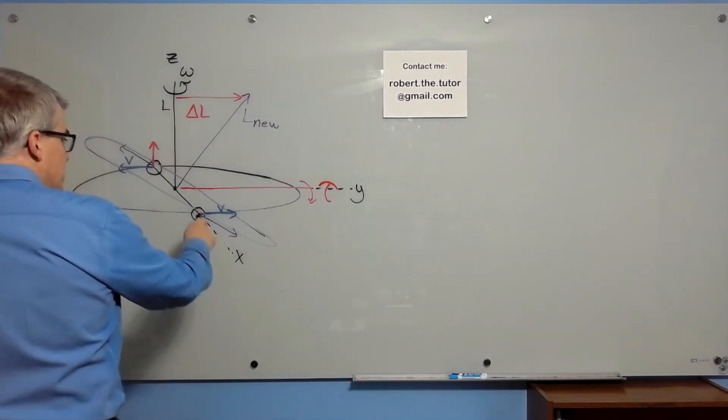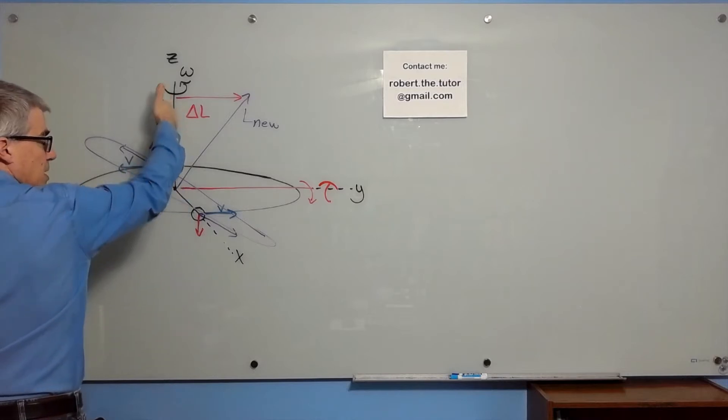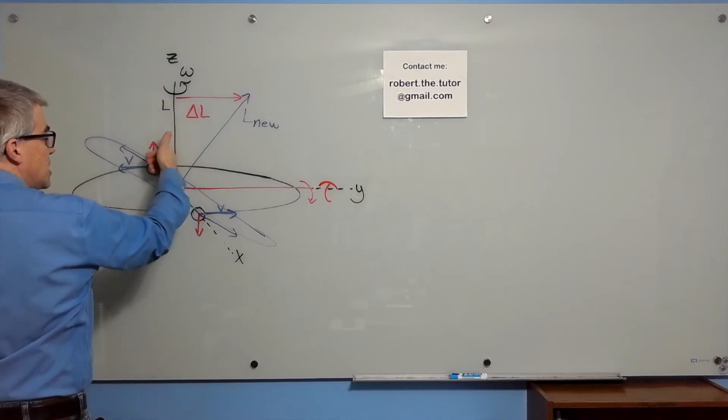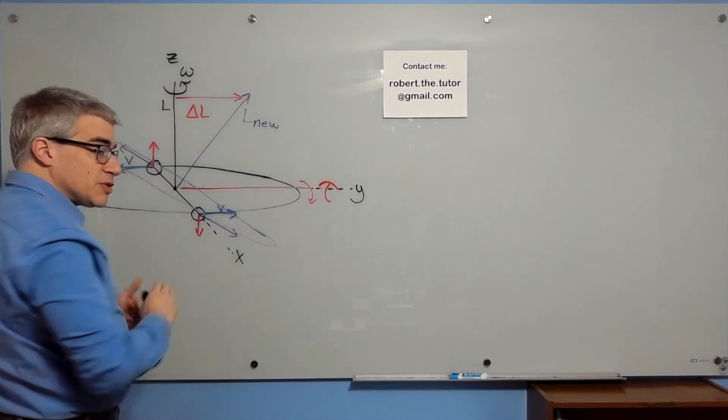So you have these two masses each going in this circle, which means the angular velocity is this way, and it's nice and symmetrical, so the angular momentum is also pointed straight up in the z direction. So far, so good.